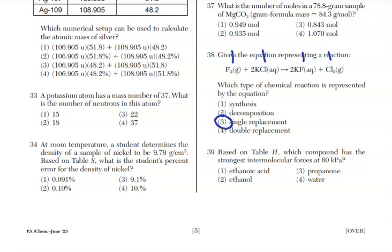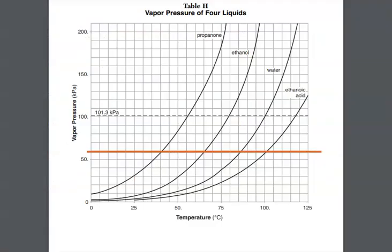For 39, it says based on reference table H, which compound has the strongest intermolecular forces at 60 kPa of pressure? Let's go to table H and get the answer. What I did is I put a line across the 60 kPa mark. And this is what I call a high-low question. Propanone is going to have the highest vapor pressure or actually take the least amount of temperature. They're all at the same vapor pressure to get to the 60 kPa. Ethanoic acid, you're going to have to put in a lot more energy to get to 60 kPa. Why? Because ethanoic acid has stronger intermolecular forces than these other three substances on reference table H.